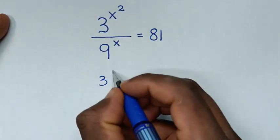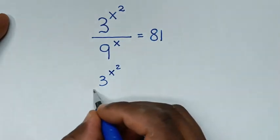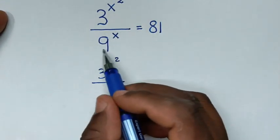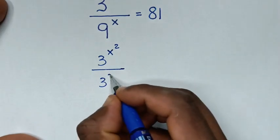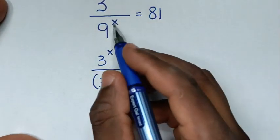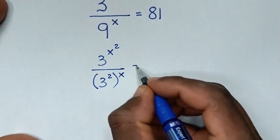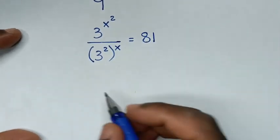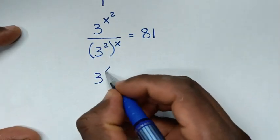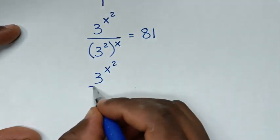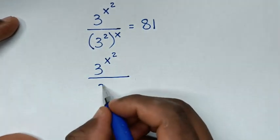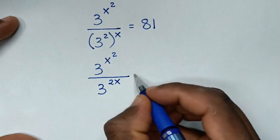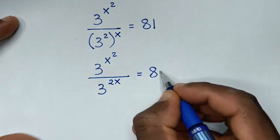In the numerator we write the same, which is 3 power of x square, over in the denominator 9 power of x. Now 9 is the same as 3 square, so we write 3 squared in bracket to the power of x, giving us 3 power of x square over 3 power of 2x, all equal to 81.